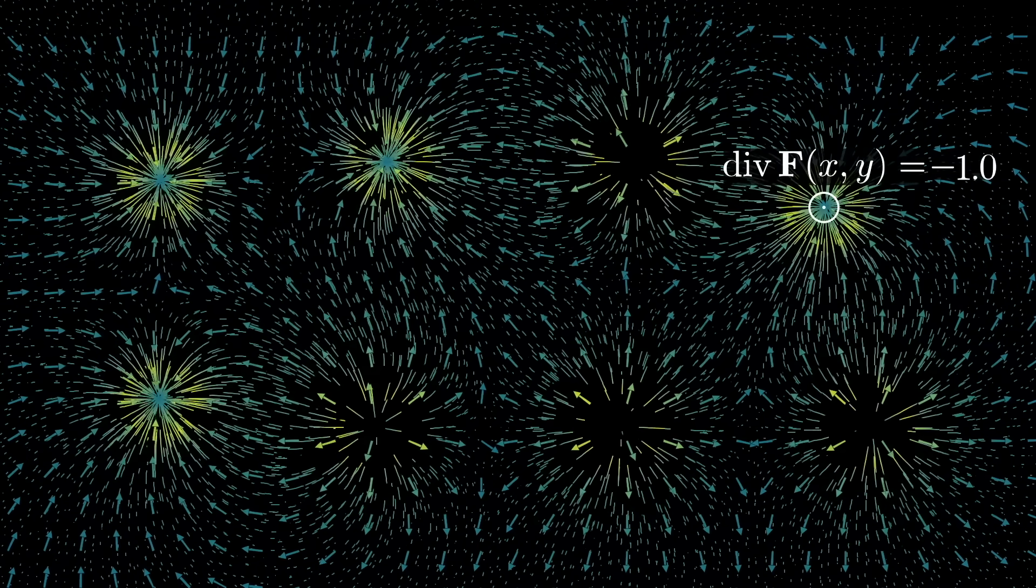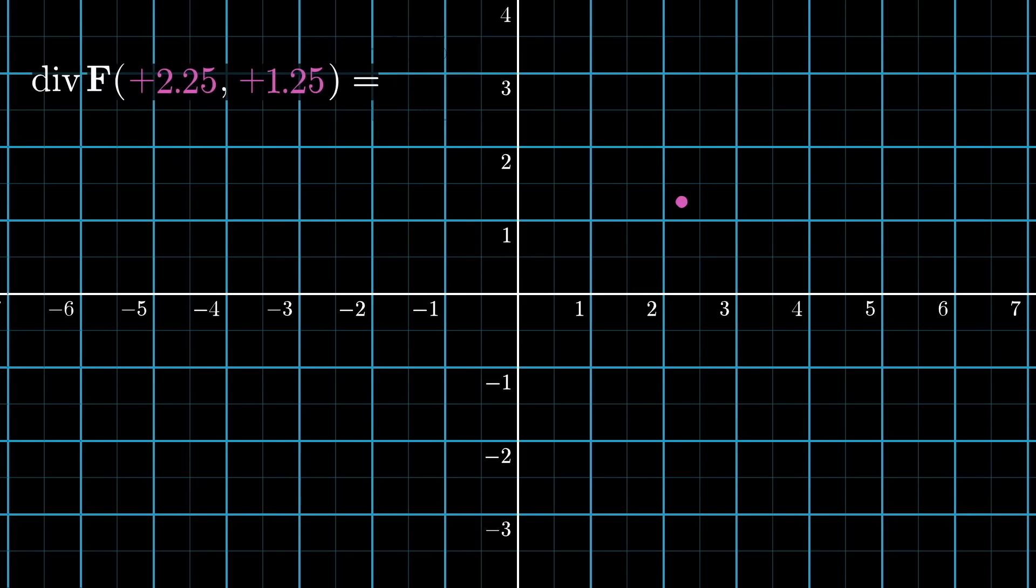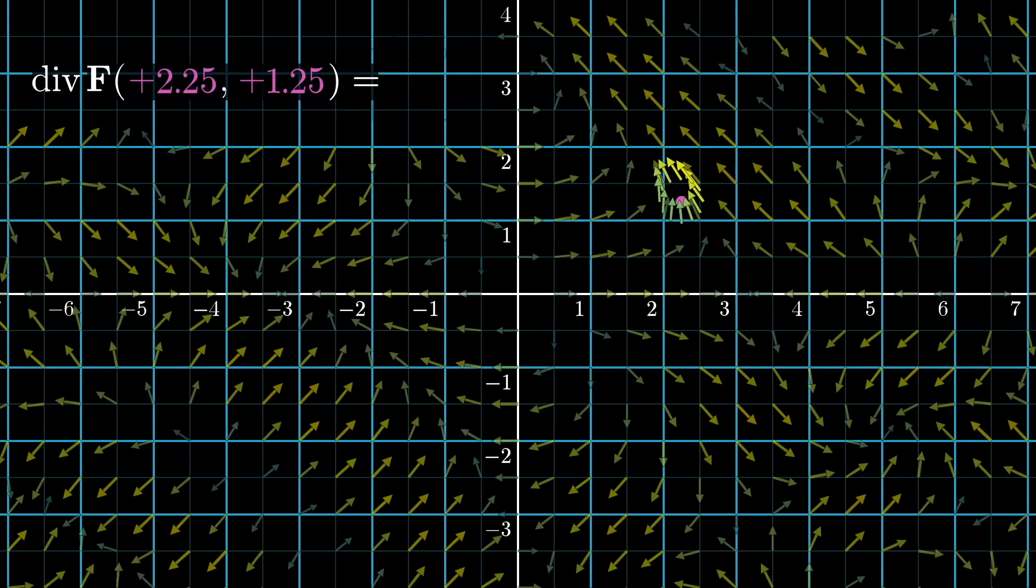Remember, this vector field is really a function that takes in two-dimensional inputs and spits out two-dimensional outputs. The divergence of that vector field gives you a new function, one that takes in a single 2D point as its input, but its output depends on the behavior of the field in a small neighborhood around that point. In this way it's analogous to a derivative, and that output is just a single number, measuring how much that point acts as a source or a sink.